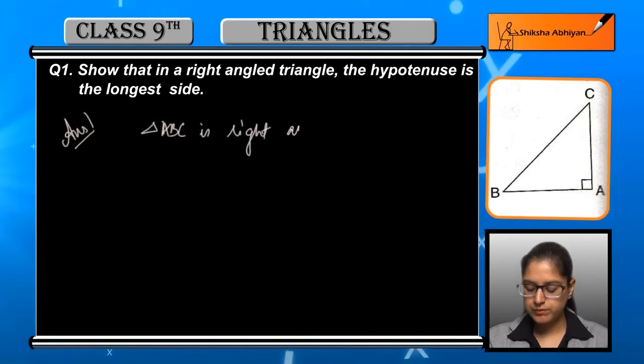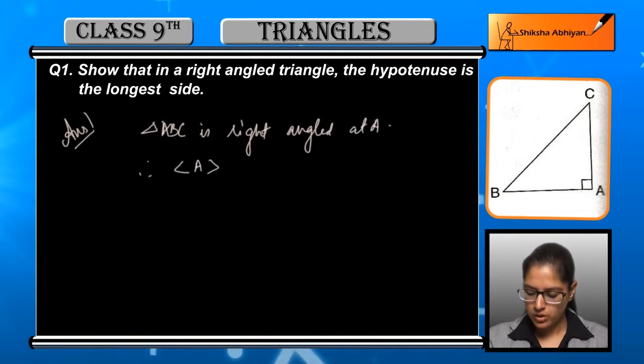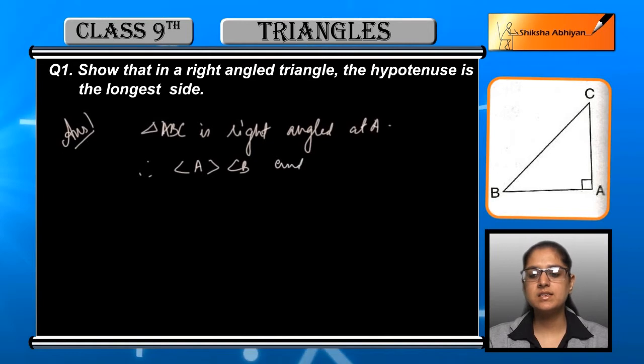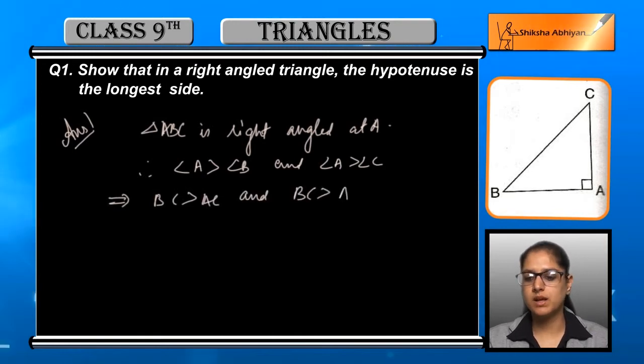So if ABC is a triangle and it is right angle at angle A, we can say that angle A is greater than angle B because right angle is the highest angle. Angle A is greater than angle B and angle C, so we can say that BC is greater than AC and BC is greater than AB.